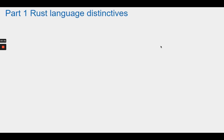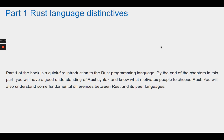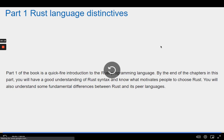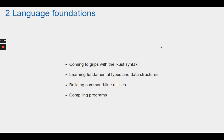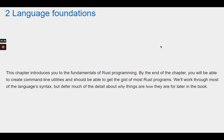Rust Language Distinctives. Part 1 of the book is a quick-fire introduction to the Rust programming language. By the end of the chapters in this part, you will have a good understanding of Rust syntax and know what motivates people to choose Rust. You will also understand some fundamental differences between Rust and its peer languages. Chapter 2: Language Foundations. This chapter covers coming to grips with the Rust syntax, learning fundamental types and data structures, building command line utilities, and compiling programs. By the end of the chapter, you will be able to create command line utilities and should be able to get the gist of most Rust programs. We'll work through most of the language's syntax, but defer much of the detail for later in the book.